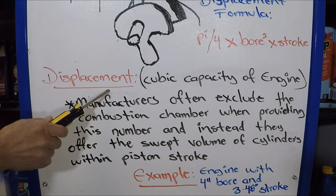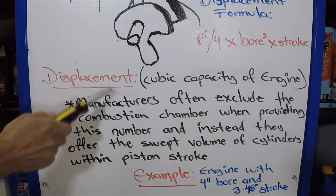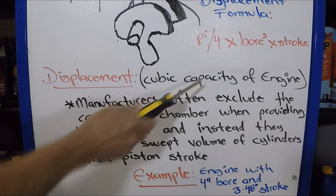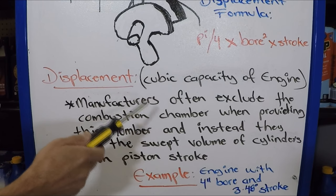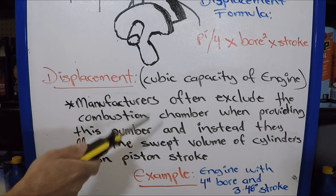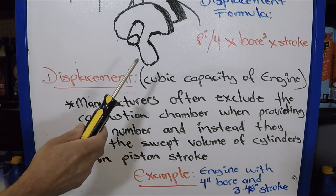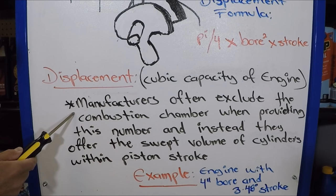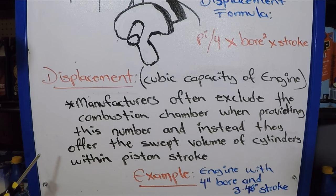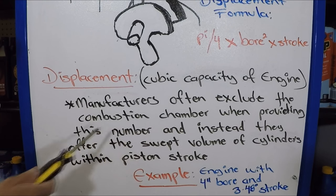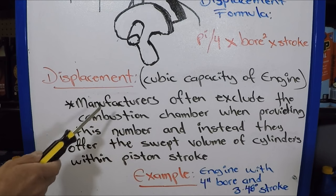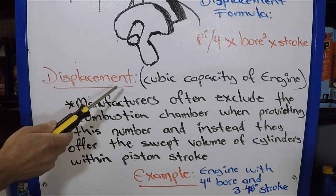So to get started, let's start with the definition of displacement, which is also known as the cubic capacity of an engine. And that is the entire cubic volume of the engine, of all the cylinders and combustion chambers. However, as I noted right here, the manufacturers are often going to exclude the combustion chamber when providing this number. Instead, they're going to provide the swept volume of the cylinders within the piston stroke. So we're going to focus on that instead, of the swept volume, instead of the entire displacement that would include the combustion chambers.